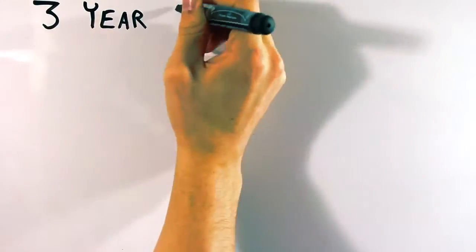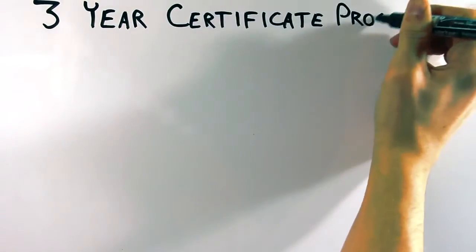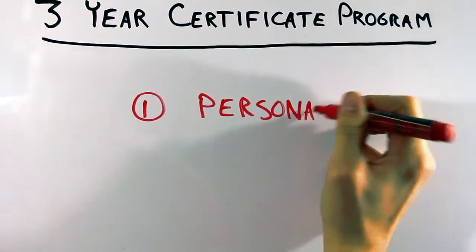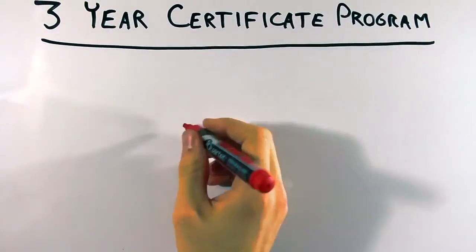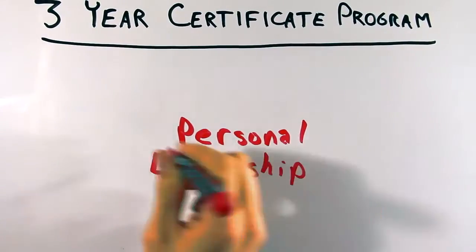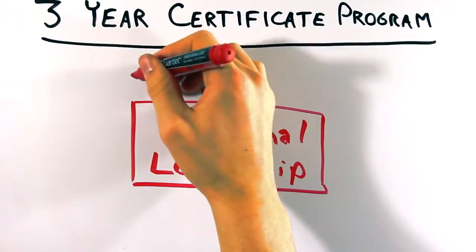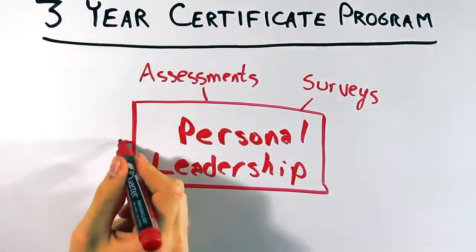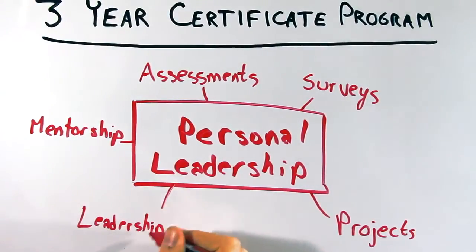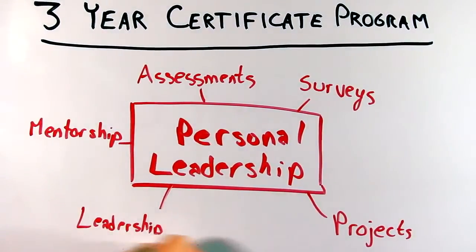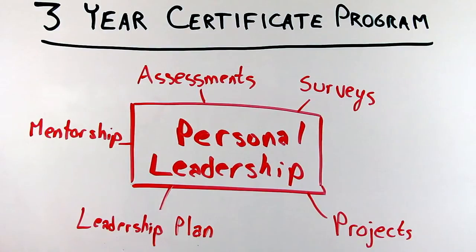A major part of the Leadership Institute is a three-year certificate program offered to students, with each year focusing on a different concentration: personal, people, and strategic leadership. During their sophomore year, students focus on personal leadership to make them more aware of themselves and their personal style of leadership. Assessment surveys, projects, and other exercises are completed to aid the students in this process. A mentorship with a business professional is established for each student to gain firsthand advice and knowledge on the real world of the workforce. All of this personal learning is accumulated by each student when they create their own individual leadership plans to follow.